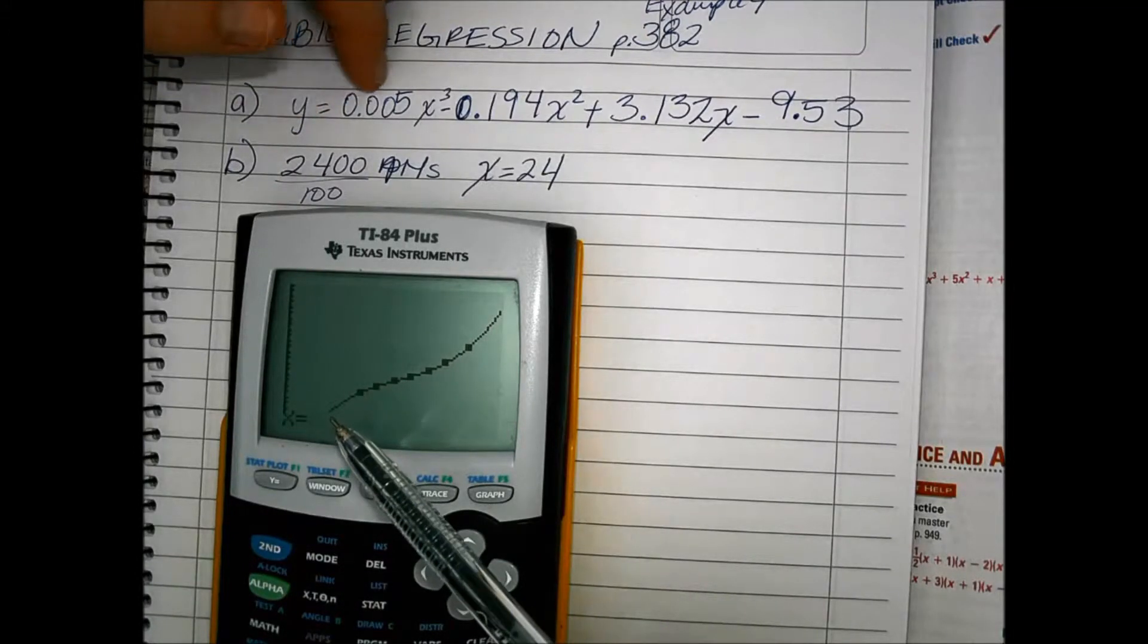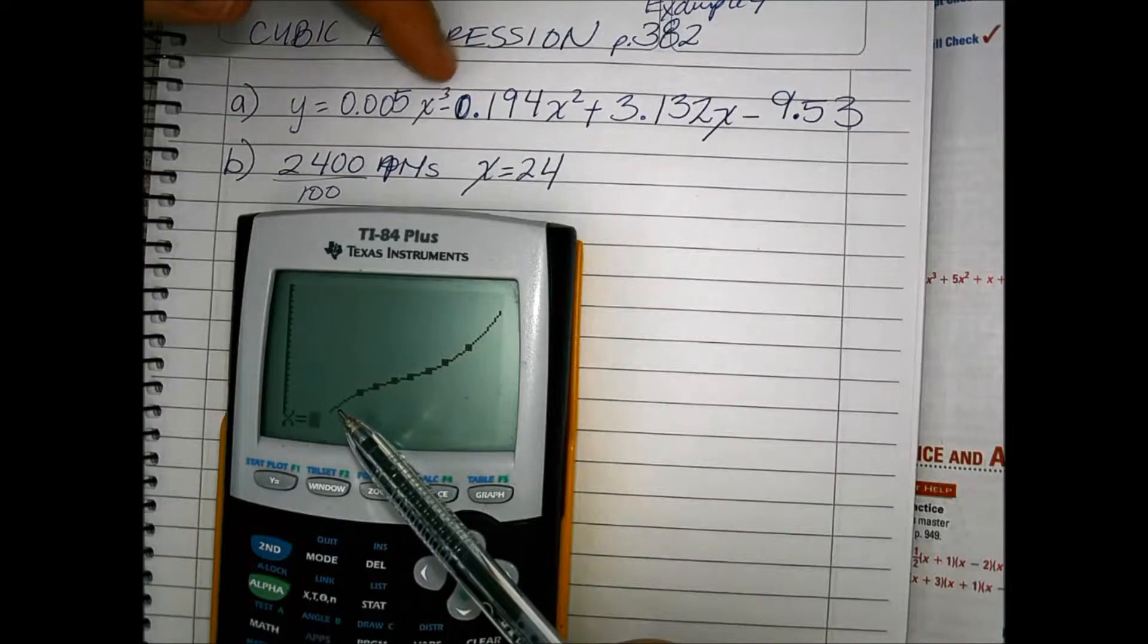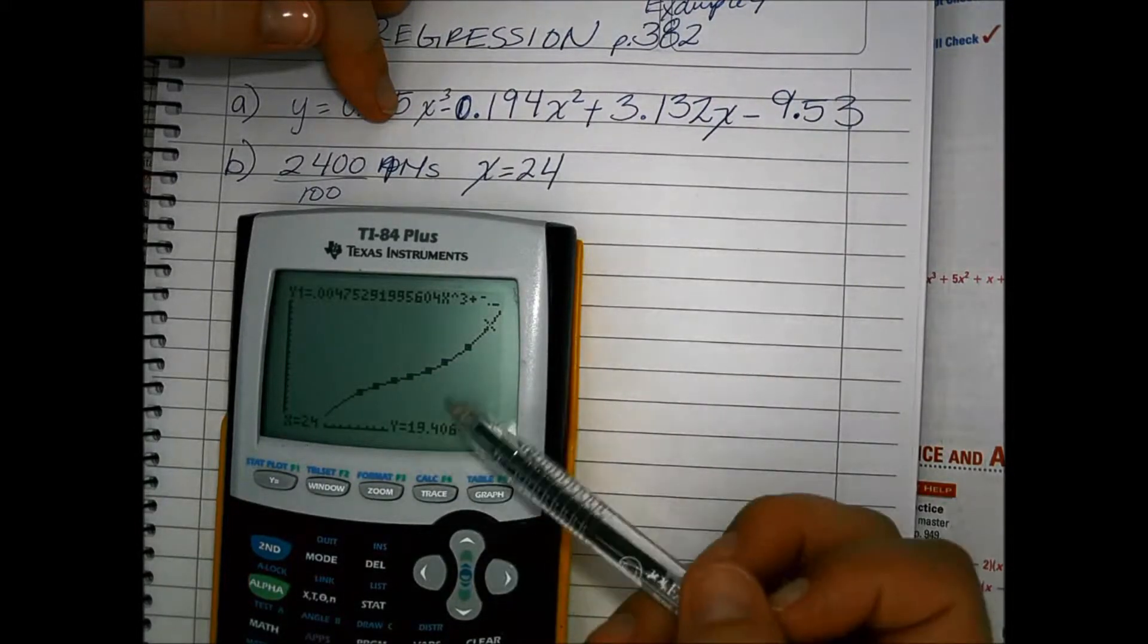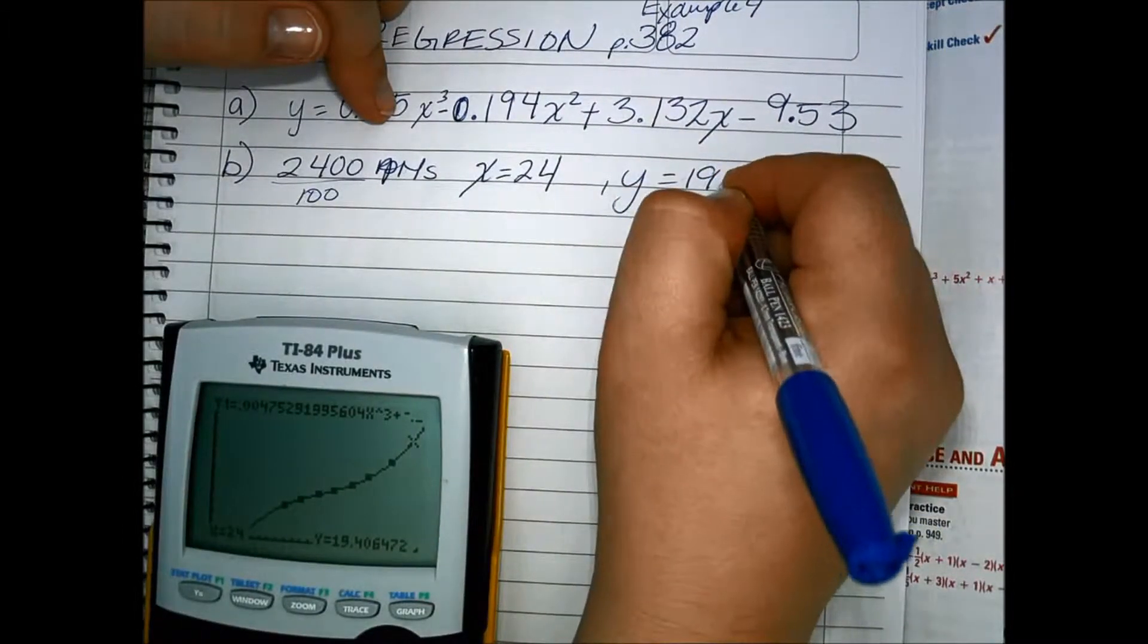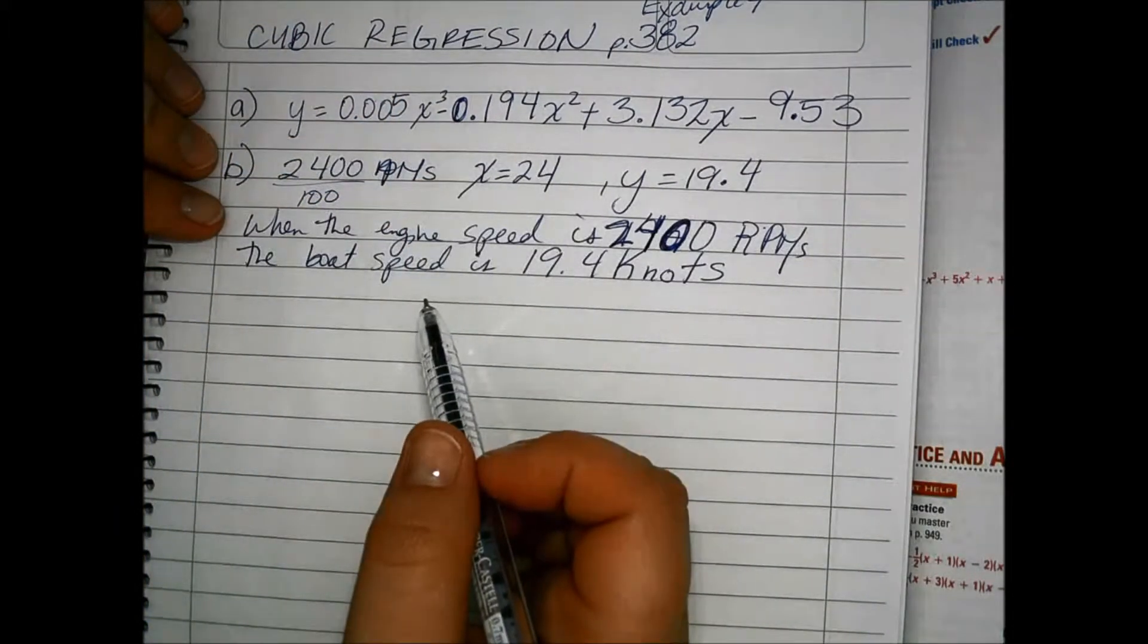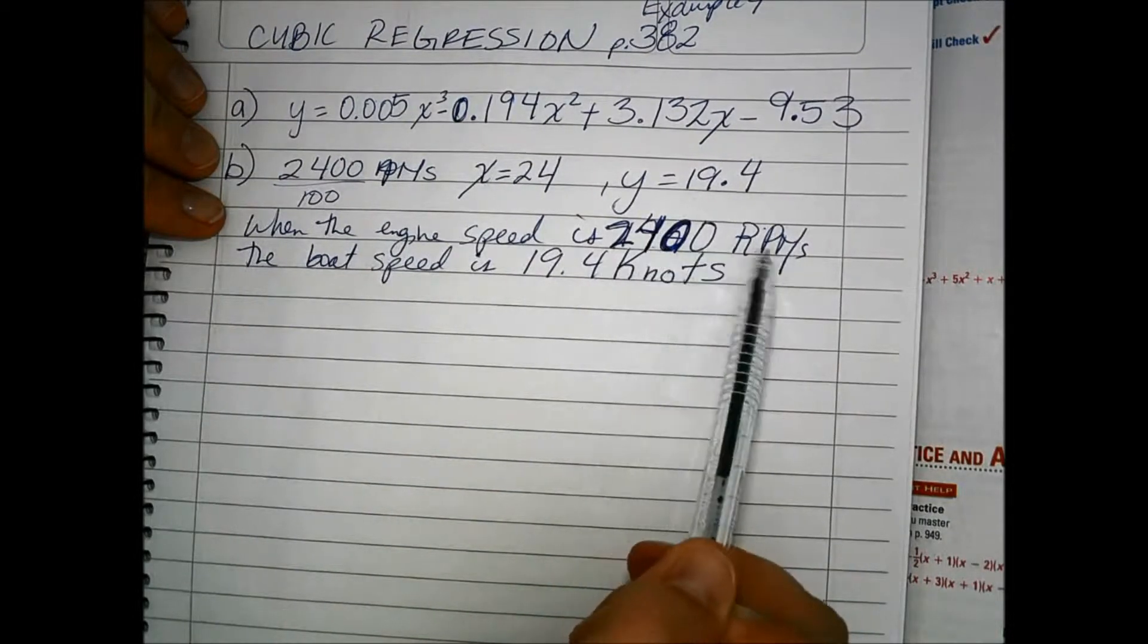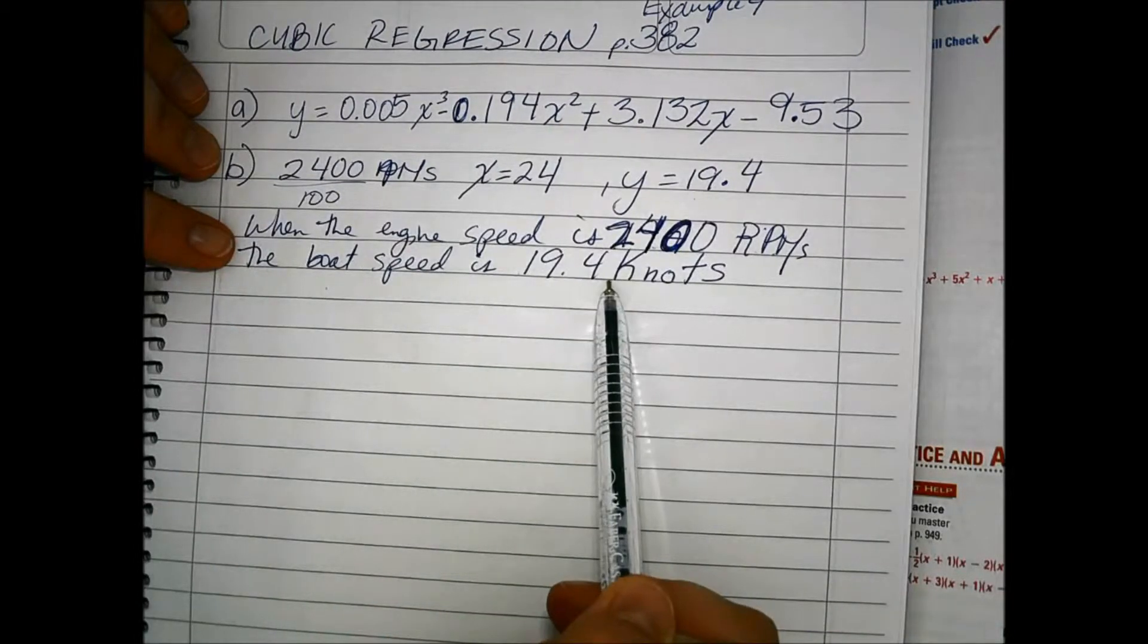See, because remember, we need to use the polynomial to represent the data. The data itself will not give us a value. So x equals 24 and our y equals 19.4. So that means that when the engine speed is 2,400 RPMs, the boat speed is 19.4 knots.